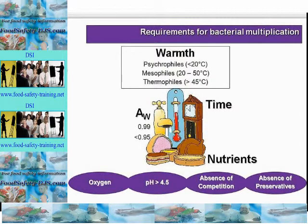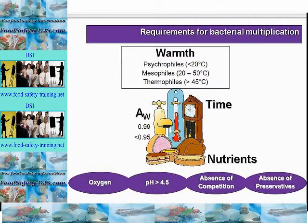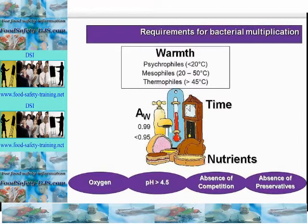What do bacteria require in order to grow or multiply? When they multiply to large numbers that's when they start to cause problems. First of all they need food, which consists of certain nutrients: protein, fats, vitamins, and minerals such as carbon and sugar. The nutrient they are mostly concerned with is high protein food such as meat, fish, and dairy produce.